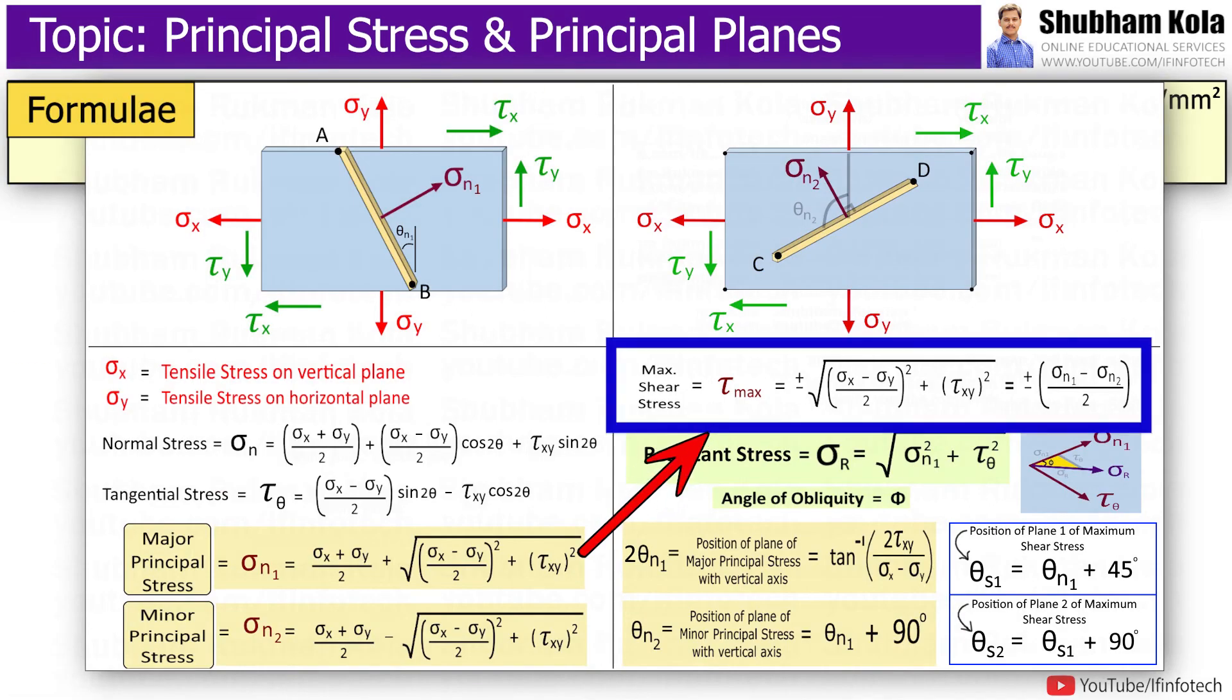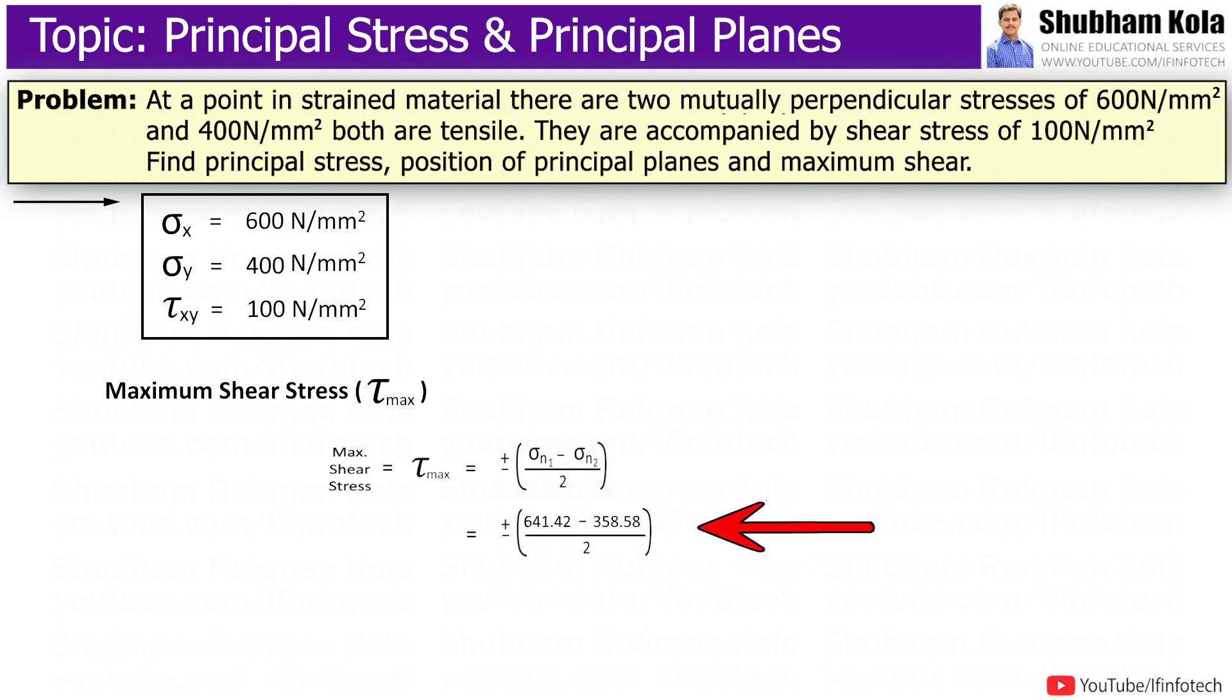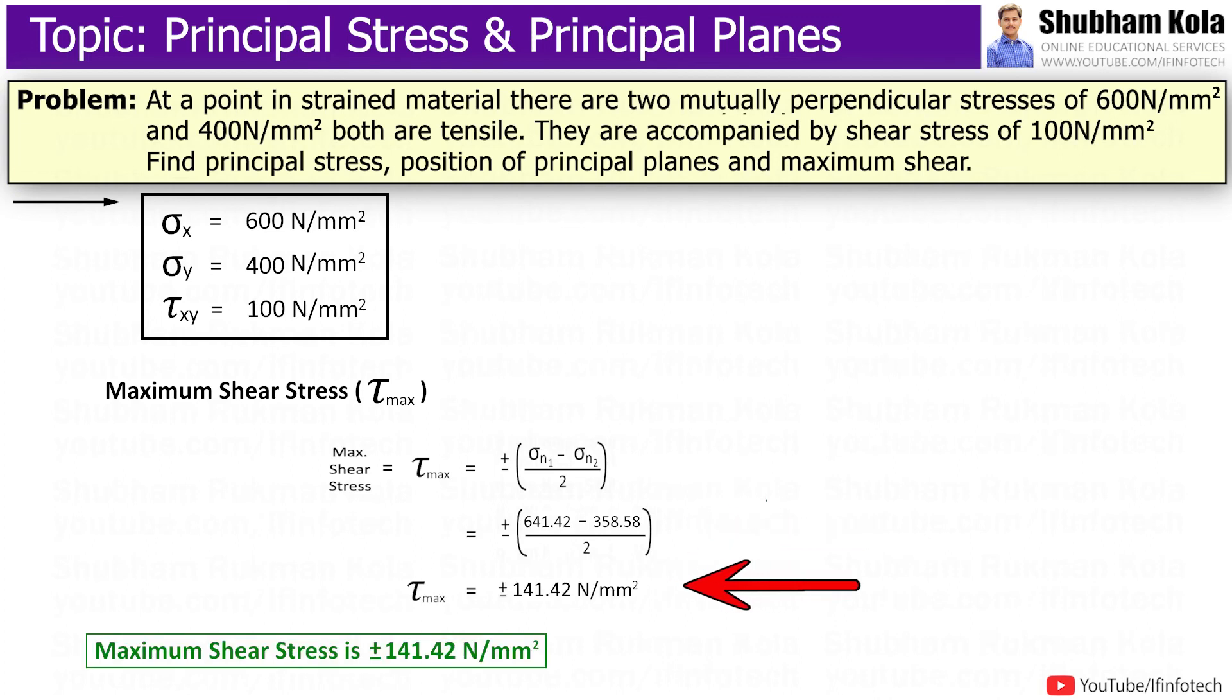Now we have to calculate maximum shear stress, that is tau_max, which is equal to plus or minus (sigma_n1 minus sigma_n2) divided by 2. So put the values of principal stresses, that is sigma_n1 and sigma_n2, and I will get tau_max will be plus 141.42 N per mm² and minus 141.42 N per mm².